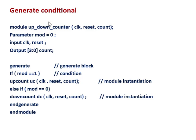Here is another example: generate conditional. We are designing a counter — one is an up counter and another is a down counter. We have parameter mod equal to 0, module with clock, reset, count ports, and parameter mod equal to 0, input clock, reset, output [3:0] count. Then we open the generate block with 'generate', and the block ends with 'endgenerate'.